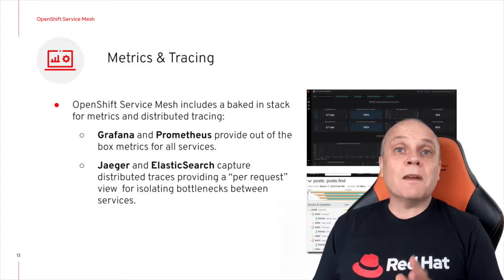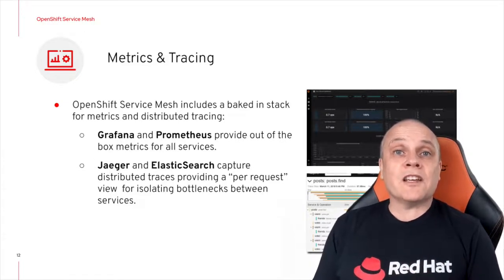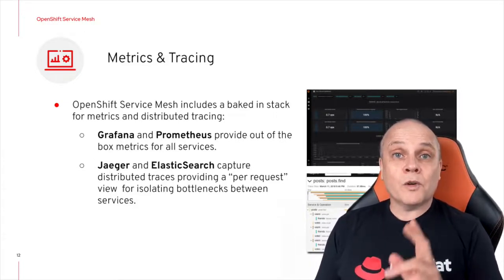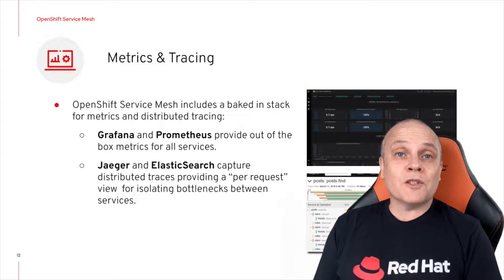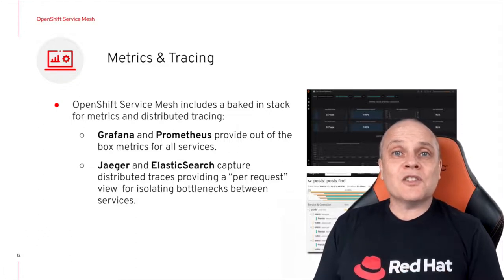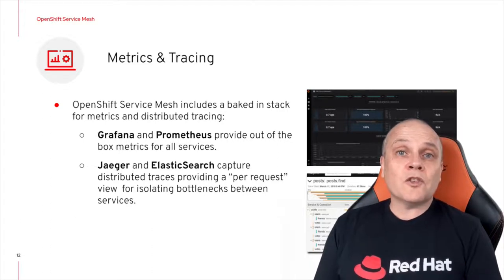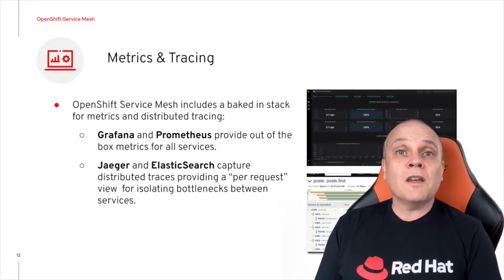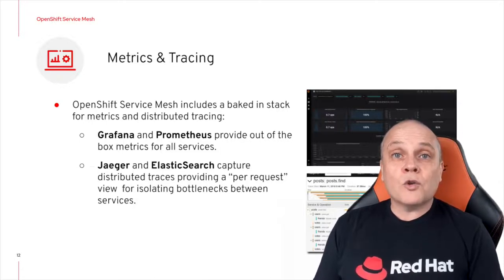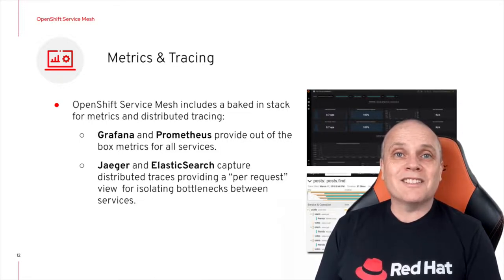OpenShift Service Mesh includes metrics and tracing in a pre-configured setup with Grafana and Jaeger, which we're the largest contributor to. This allows users to have out-of-the-box metrics for viewing the performance of services within a mesh. Distributed tracing provides a per-request view of the system, making it easier to identify bottlenecks in the system or tracking issues on a per-user basis.